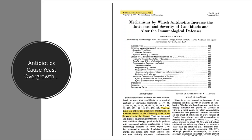You can see here the highlight: that patients on antibiotics experience proliferation of candida albicans in the alimentary canal is no longer a point for dispute. In essence, it's fact. Antibiotics can cause yeast overgrowth in the gut — that's what the alimentary canal is. So we know that antibiotic use can cause yeast overgrowth.